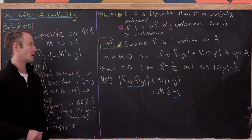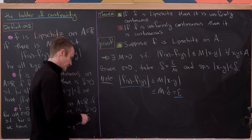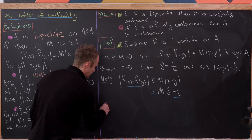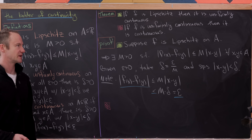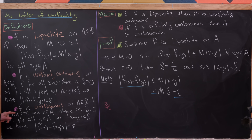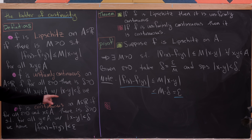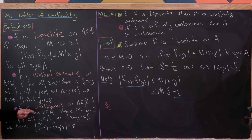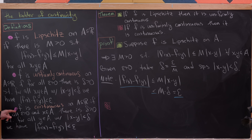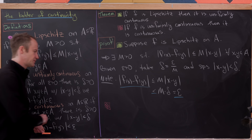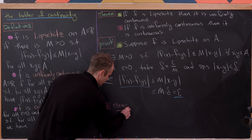Notice our delta did not depend on x. Now, showing that uniform continuity implies continuity is clear: whatever delta is associated to uniform continuity works for all x and y in A, so it works for any fixed x chosen before the delta. Since it works for all x and y, this implication is clear from the verbal discussion.